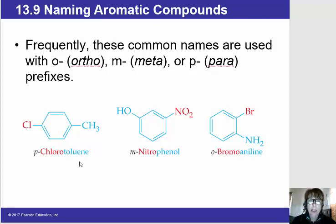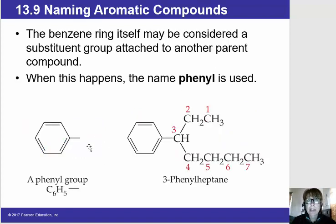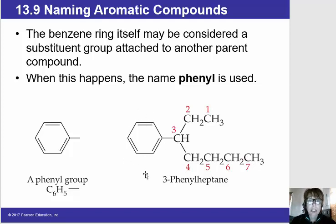So when we use these common names of toluene, phenol, or aniline, if they're substituted by another substituent, we tend to use P, M, and O rather than the systematic numbering system. Now, if a benzene ring is a substituent itself — for example, if we look at this compound on the right, and the longest chain is seven carbons — that's longer than the six carbons in the benzene ring. Then the benzene bonded to this seven-carbon backbone is considered a substituent. When the benzene ring is considered a substituent, we call it a phenyl group. So the name of this hydrocarbon with the seven-carbon backbone and the phenyl group bonded to the three carbon is known as 3-phenylheptane.